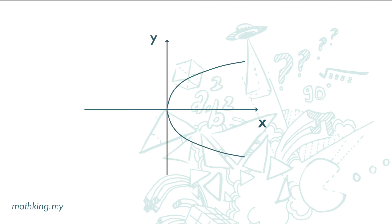Look at this graph. If we draw a vertical line here, we can see that the vertical line cuts the graph at two points. So one object is mapped to two images, and this is not a function. For a function, one object cannot map to two images.